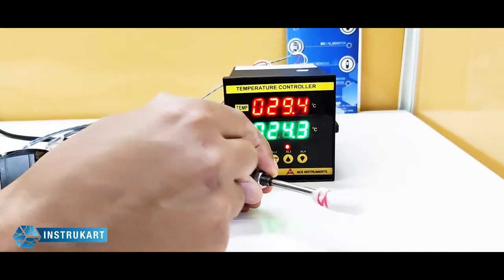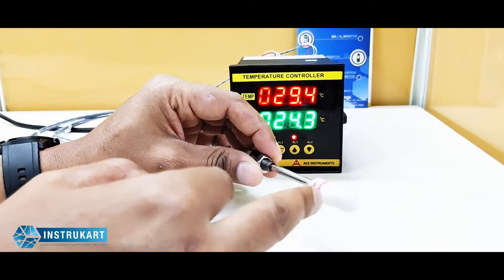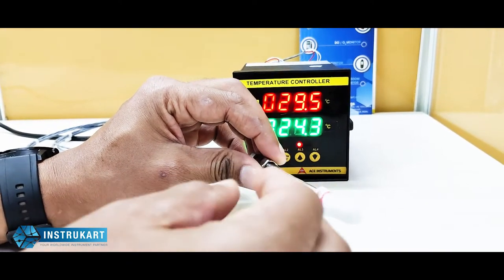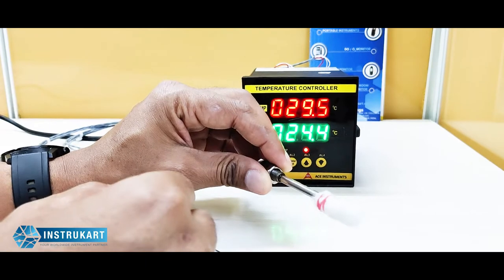However, the wet bulb temperature is a little lesser because there is cotton and the water is evaporating. As the water evaporates, it gives a cooling effect.